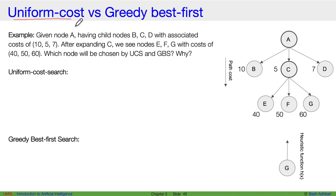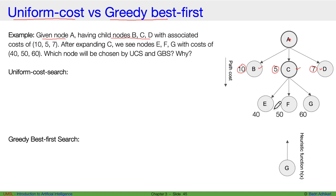Let's look at the difference between the Uniform Cost Search algorithm and Greedy Best First Search. Given node A with child nodes B, C, and D with associated costs of 10, 5, and 7, and after expanding C we see nodes E, F, and G with costs of 40, 50, and 60 from C — which nodes will be chosen by UCS and Greedy Best First Search?